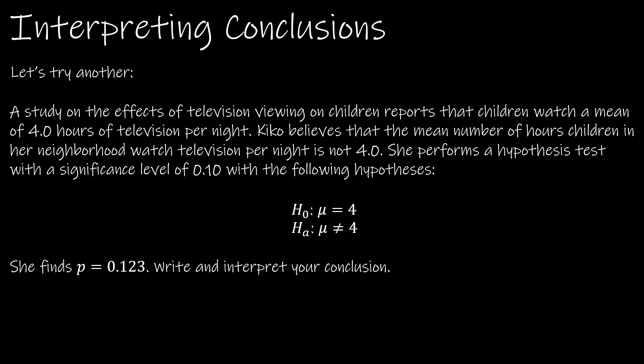Let's take a look at another. We're looking at the effects of television viewing on children - hot topic always. People believe that children watch a mean of four hours of television per night, and Kiko believes that that is not the case in her neighborhood. So she performs a hypothesis test with a significance level of alpha of 0.1. And of course, these would be our hypotheses: H₀: μ = 4, Hₐ: μ ≠ 4, because she believes that it's not this case.